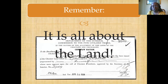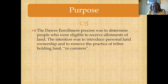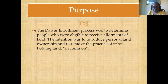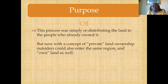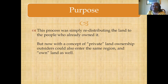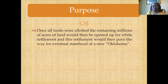You will eventually get to records that reflect the fact that enrollees actually received allotments of land. The purpose was actually to redistribute land that already belonged to people who owned it. The concept was to introduce personal land ownership to the tribes that had before this time owned land in common. Basically, they were giving the land back to the people who already owned it, but by introducing private land ownership, millions of other acres would then be available for eventual statehood.